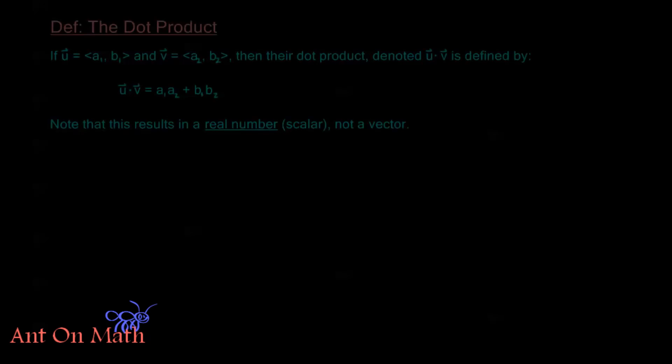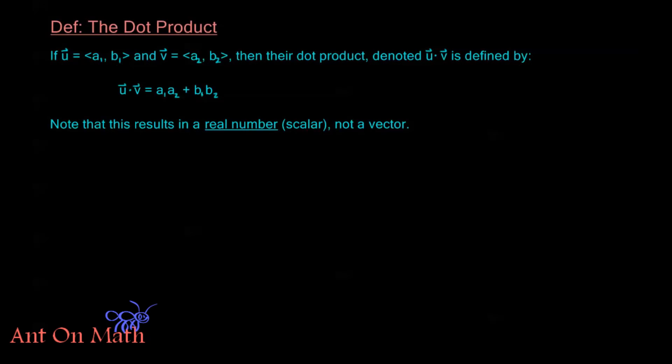Hello and welcome back to Anton Math. In this video we're going to take what we've been talking about with these two-dimensional vectors and define a new operation on these vectors, and that operation is called the dot product.